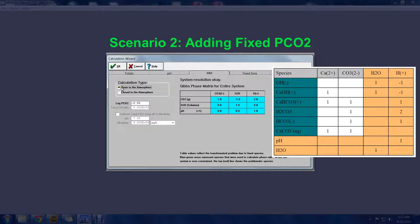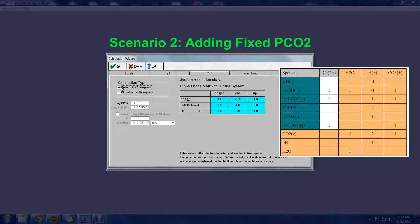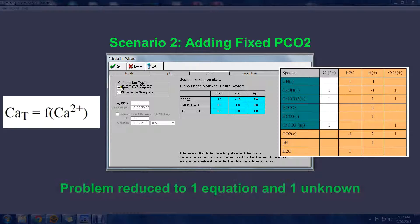Again, the tableau reduces in scope, and our problem reduces down to one equation and one unknown.